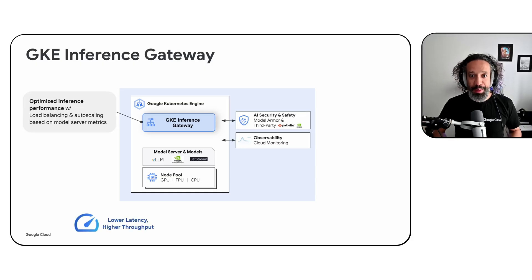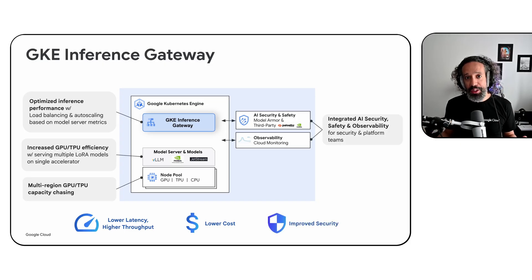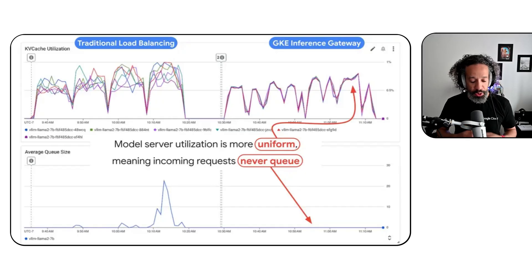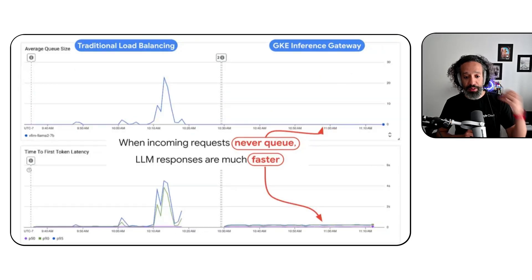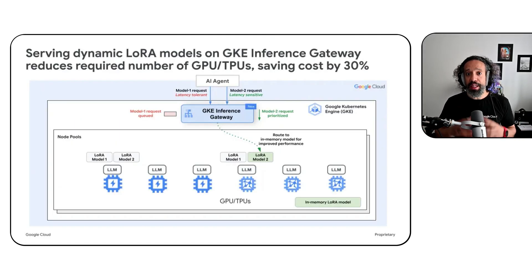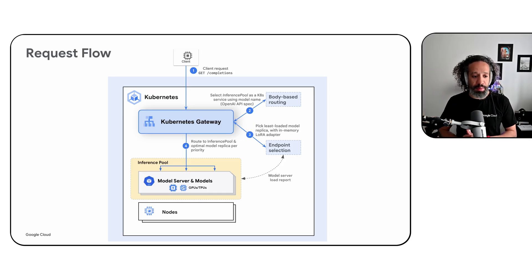Starting with something super exciting: we announced the GKE Inference Gateway at Next. The GKE Inference Gateway is an extension of an upstream inference extension in the Gateway API project, specifically built for GKE. It allows users to deploy multiple LLMs on GKE and intelligently route traffic to the appropriate LLM based on request characteristics. This matters because LLM traffic differs from web traffic — connection times can be very long. We've also been collaborating with ByteDance and Red Hat to make inference better, contributing upstream to the Gateway API inference extension.